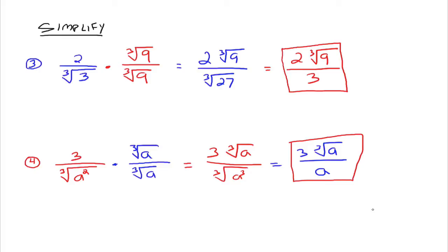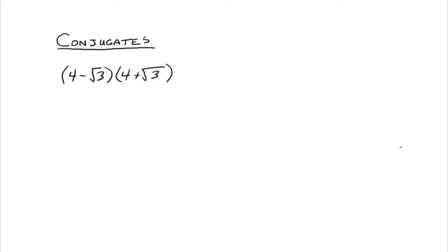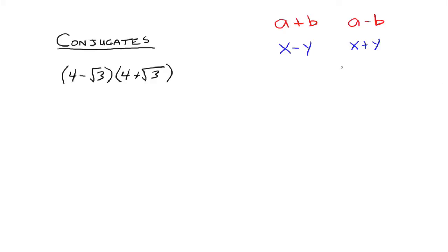Now I want to introduce a new word: conjugates. Conjugates occur with binomials. The first term in each part is the same and the last term is the same, but one has a minus in between and the other has a plus in between. In general, if you've got a plus b, then its conjugate would be a minus b. If you've got x minus y, then its conjugate would be x plus y. Everything stays the same except the sign in the middle — one's plus and one's minus — and this is only for binomials.